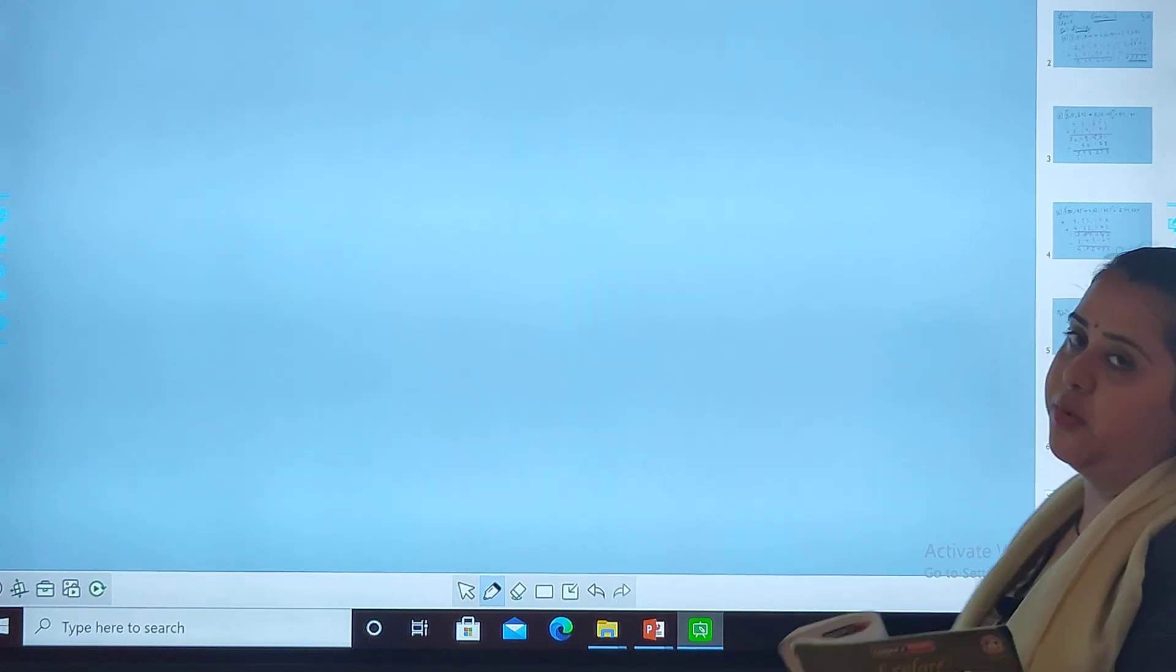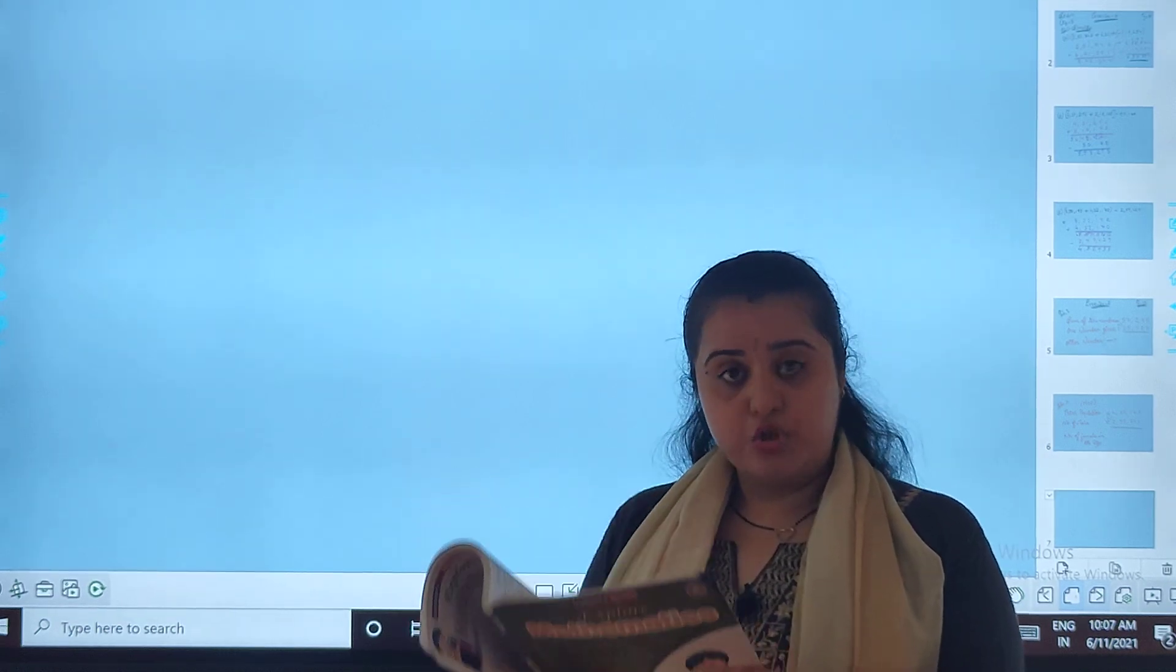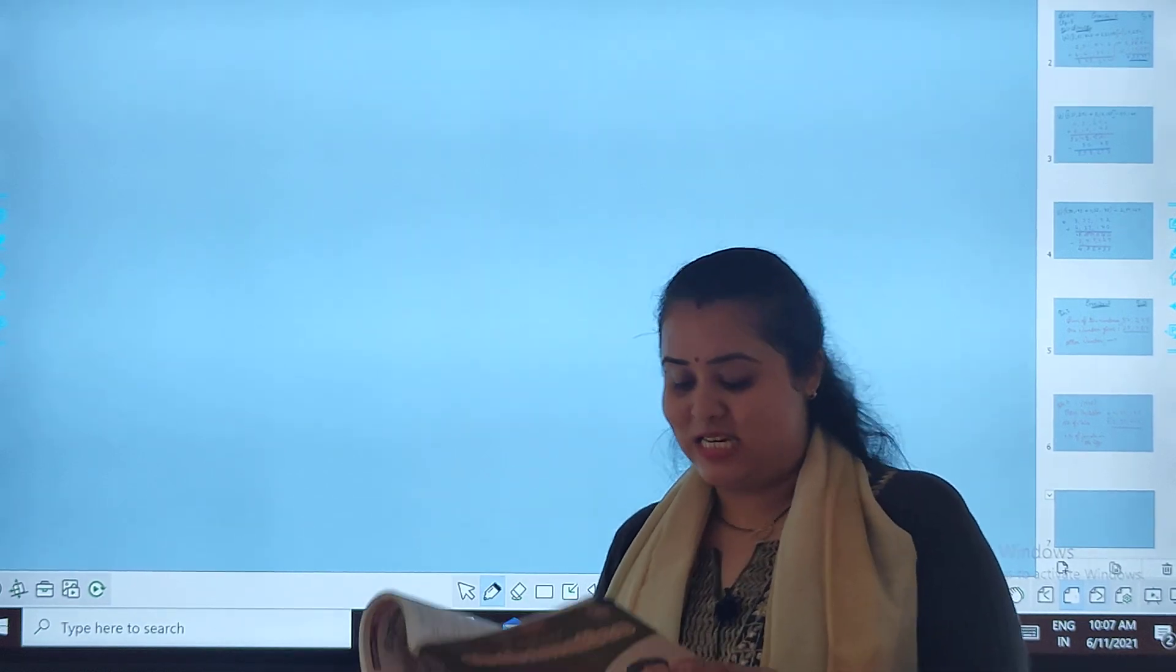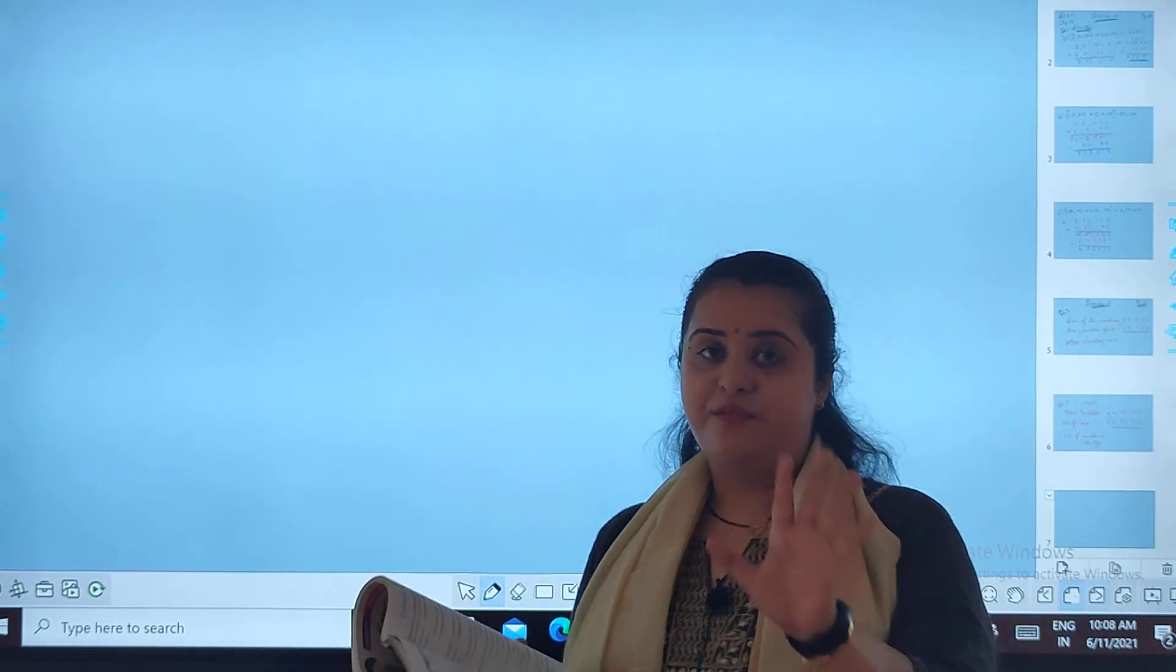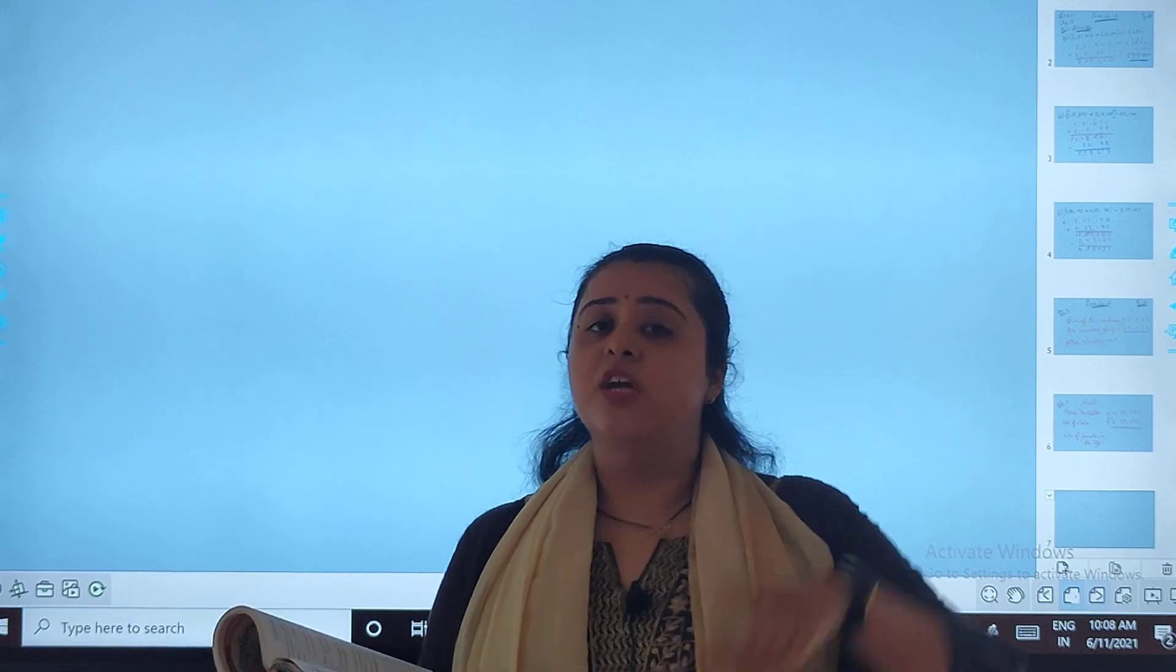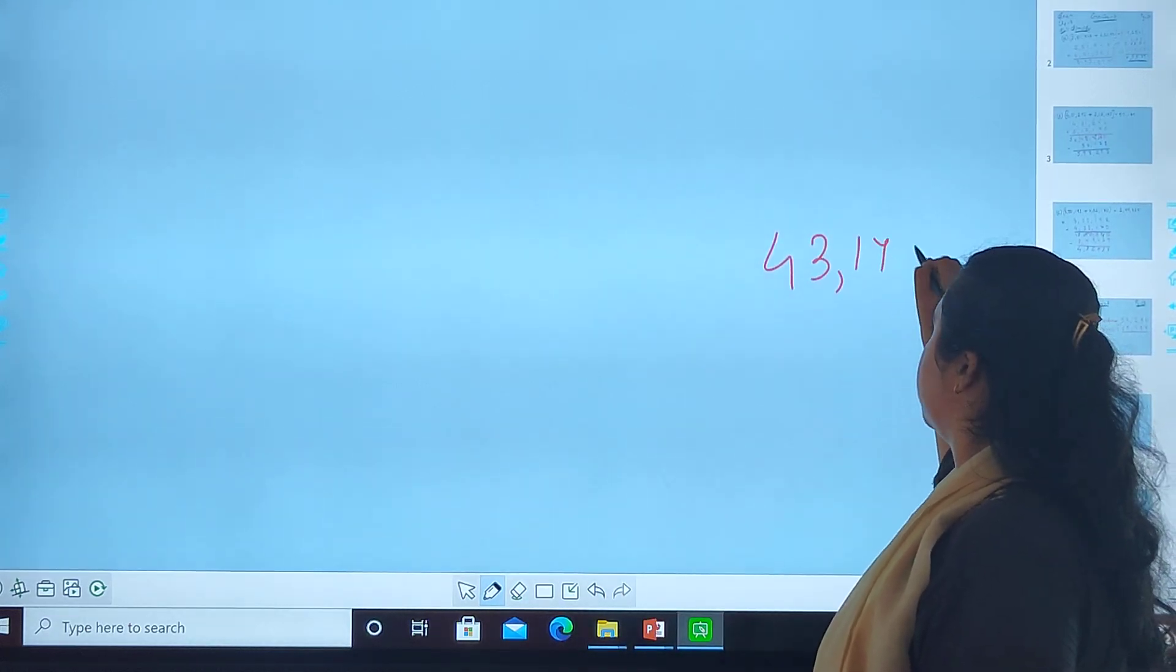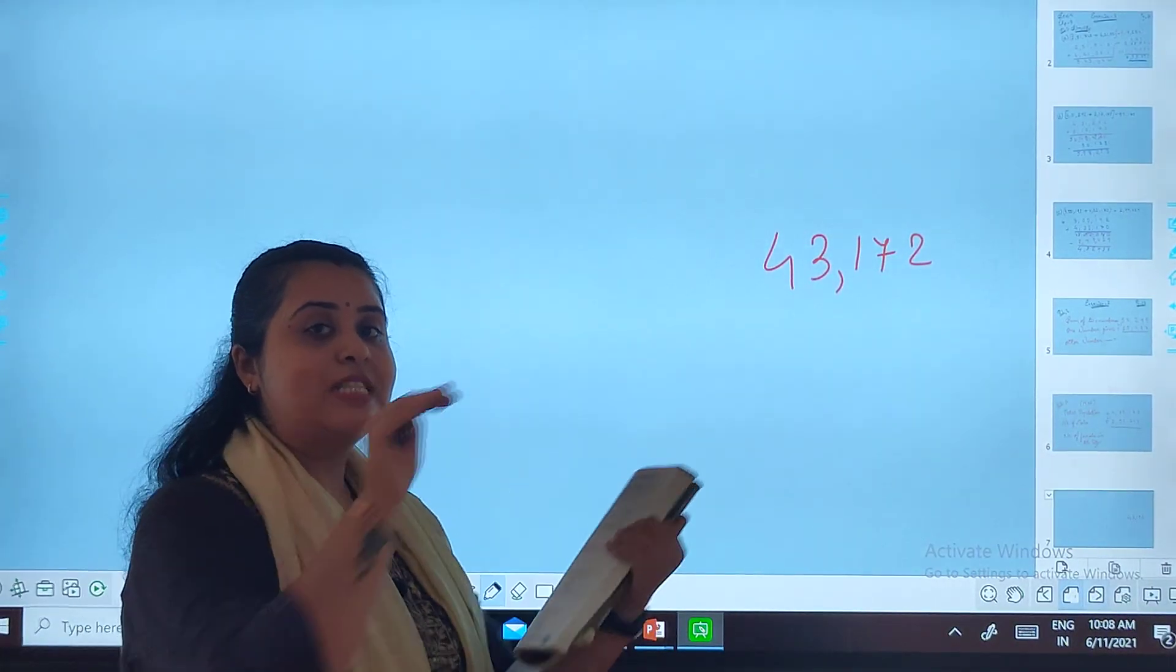Let us discuss the third one. What must be added to 43,172 to get 82,054? What must be added? For example, you have 43,172 rupees, okay? And you need to pay 82,054. I have 43,172 rupees in my hand and I need to pay some amount, 82,054.